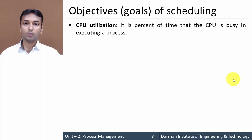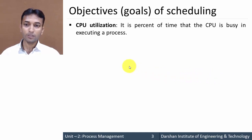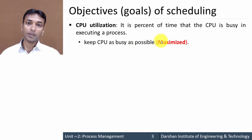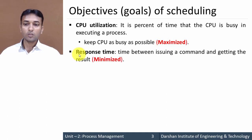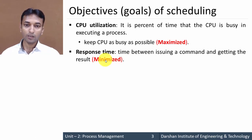Next is CPU utilization — the percentage of time the CPU is busy executing processes. We should keep the CPU as busy as possible so that maximum processes are executed, and CPU utilization must be maximum. After that, response time is the time between issuing a command and getting the result; it should be minimum so that you get results immediately after issuing a command.